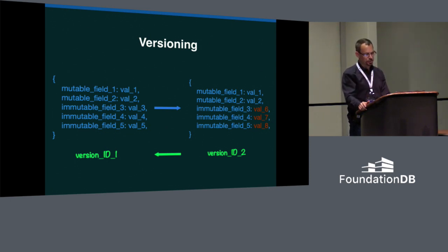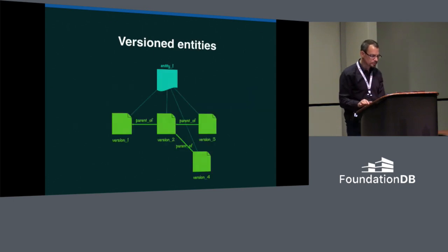Versions form a parentage tree and can be explicitly selected for use, also like git. Each entity is modeled as a collection of objects that represent its distinct versions, along with a core object for mutable, non-versioned fields.